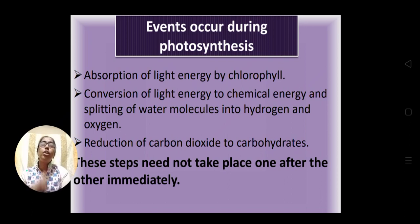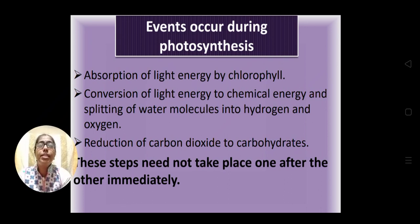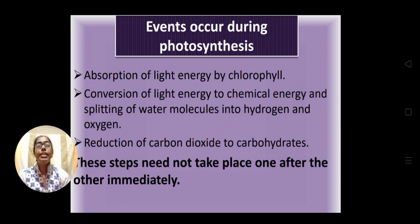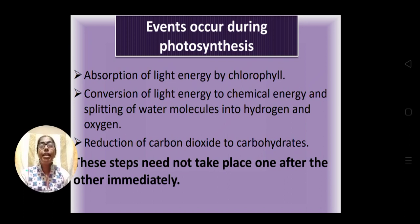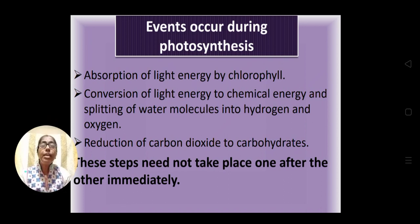During photosynthesis, three important events occur. The first is absorption of light energy by chlorophyll — the chlorophyll pigments present in the leaves absorb light energy. The second event is that the chlorophyll pigments convert light energy into chemical energy, which is the carbohydrate or glucose. Also, water received through the roots is split into hydrogen and oxygen.